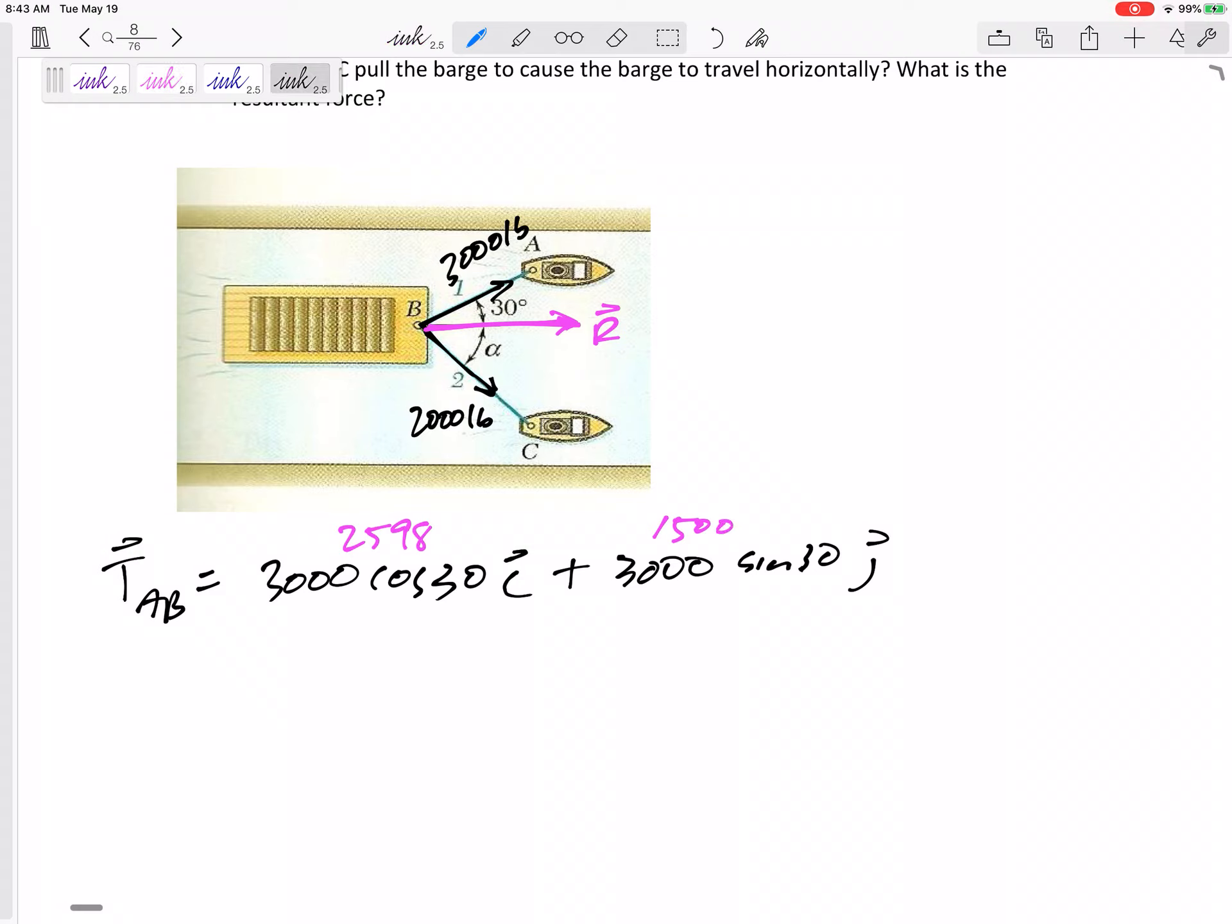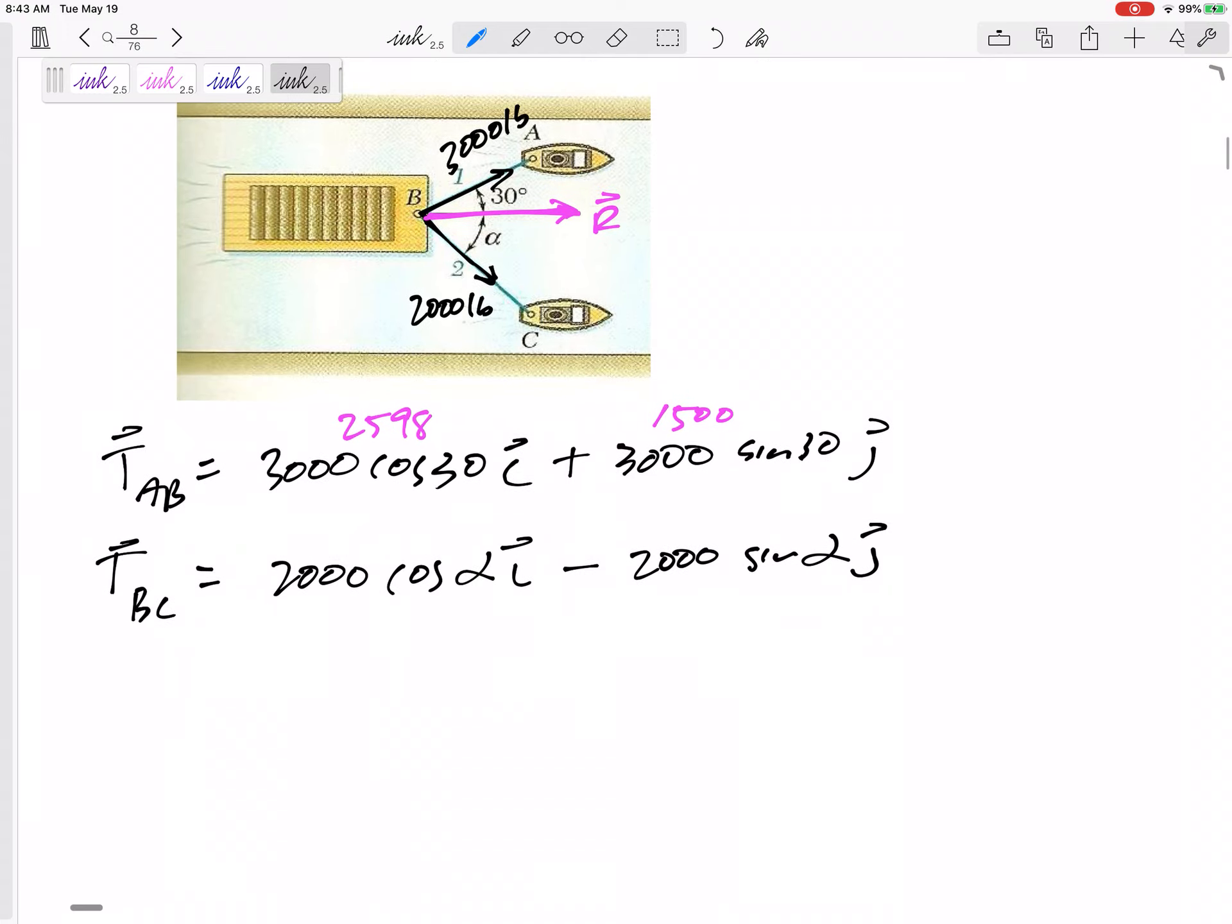All right, and let's break up TBC as much as we can. 2,000, it would be cosine alpha. I don't know alpha just yet. And then down 2,000 sine alpha in the j. So I've broken them into their components as much as we can.